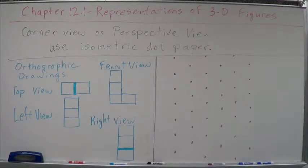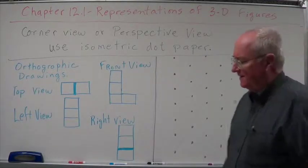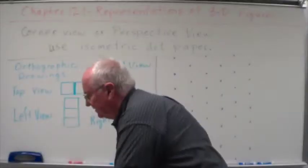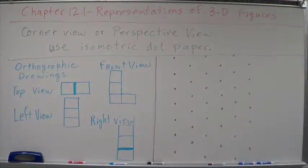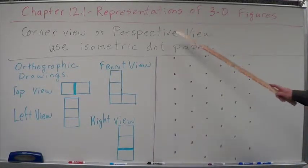Okay, now what we're going to do is we're going to use isometric dot paper to reconstruct a three-dimensional view, or a corner view, or a perspective view.